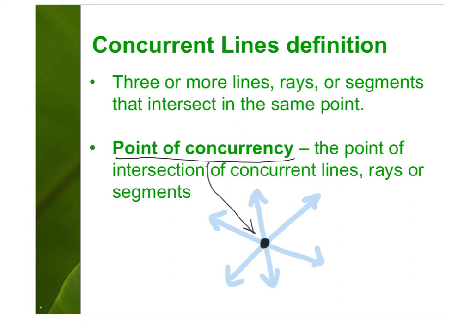Would two line segments that meet up be a point of concurrency? No — you need a minimum of three. This would be a point of concurrency. You've got to have at least three lines, rays, or segments that intersect at the same point.